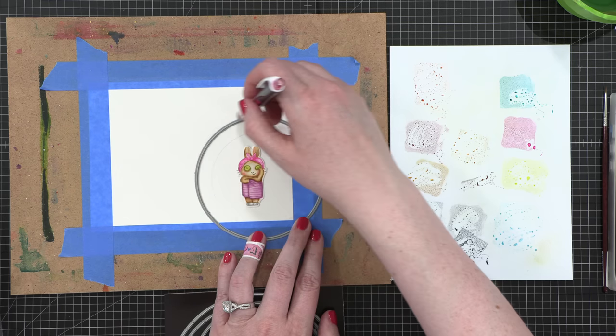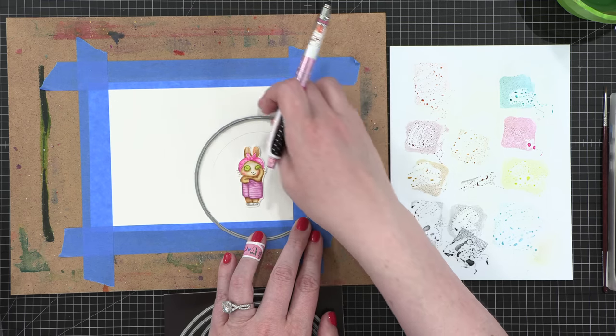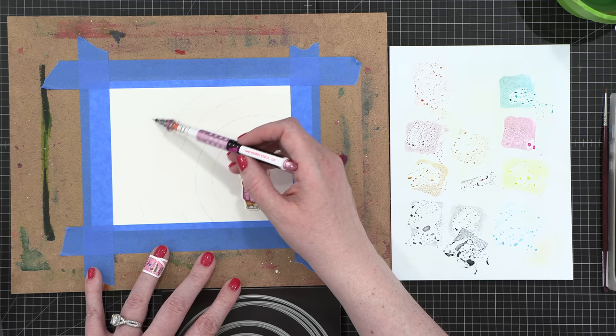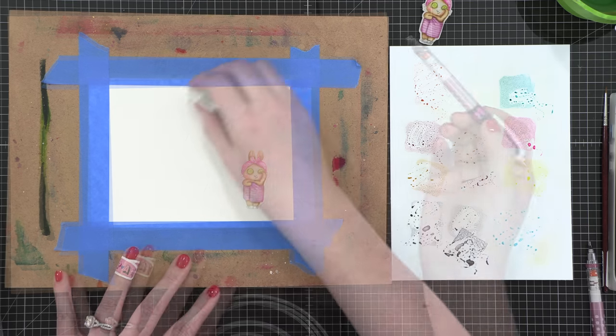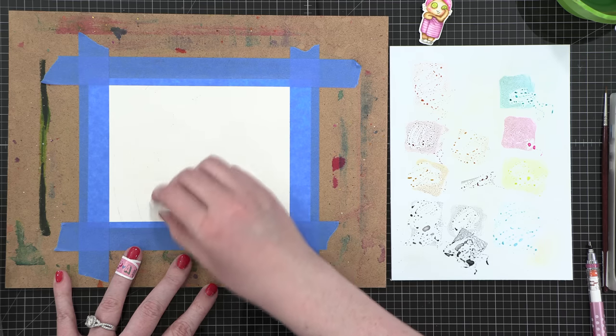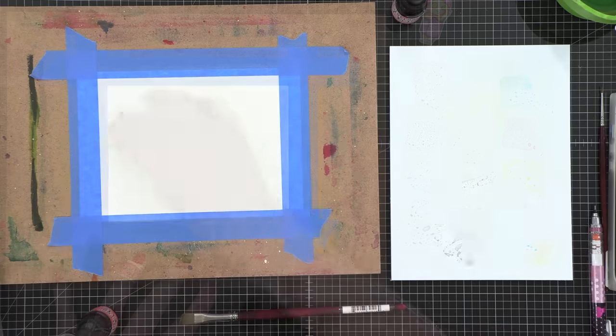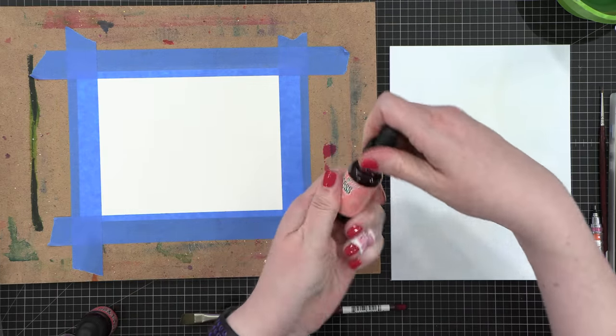So I'm using the nested circles die set from Simon Says Stamp just as a guide and then once the circles aren't big enough anymore I just used a pencil and drew on some circle shapes. So I'm going to be painting these stripes so it's not really important if they're completely straight or not.